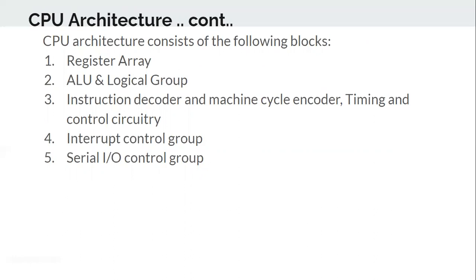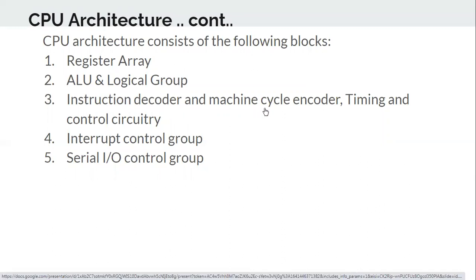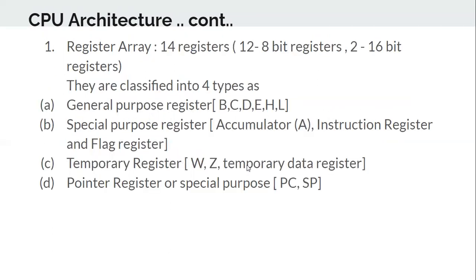A CPU can be broadly divided into the following groups or blocks: register array, ALU and logical group, instruction decoder, machine cycle encoder, timing and control circuitry, interrupt control group, and serial control group. When I say register array, I'm talking about the very basic microprocessor, the Intel 8085.